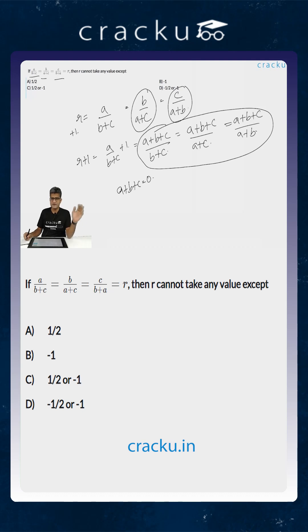or if it is not equal to 0, we can just cancel it off. And if you are cancelling it off, we are going to get b plus c is equal to a plus c is equal to a plus b, which would essentially imply that a is equal to b is equal to c.